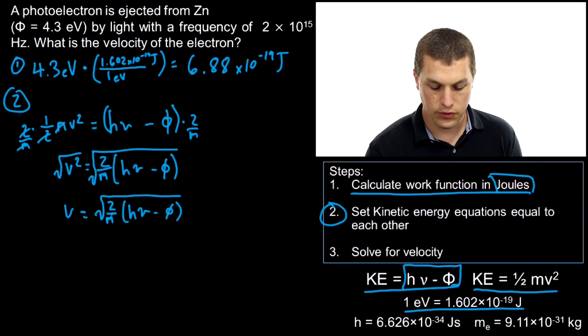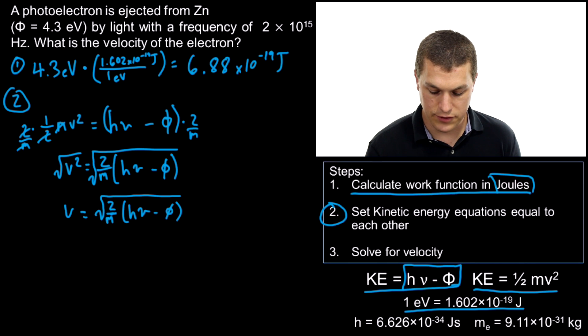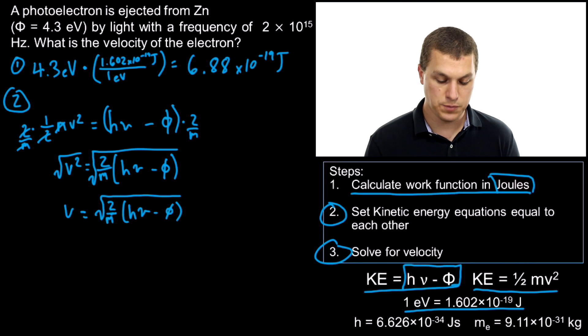This is just basically solving our equation for velocity so that we can plug in our numbers and calculate it. That's our final expression for velocity. The last thing we have to do, after we solve for velocity, is plug our numbers in.